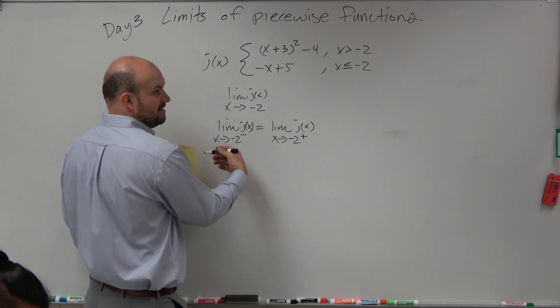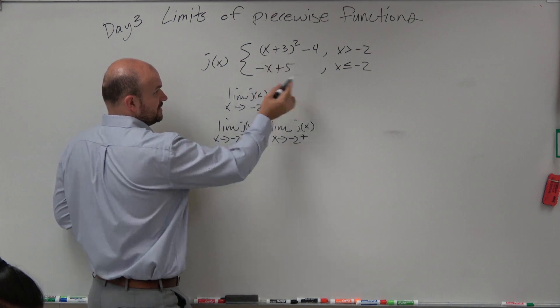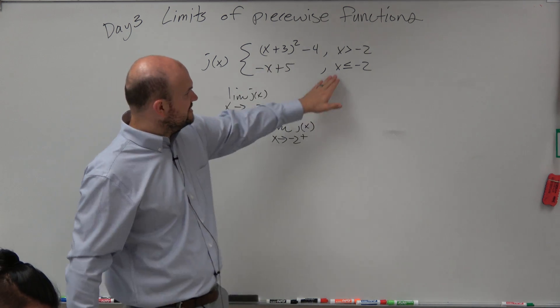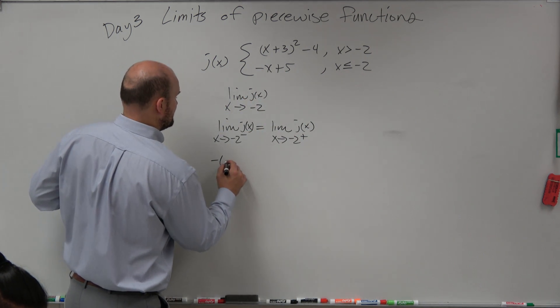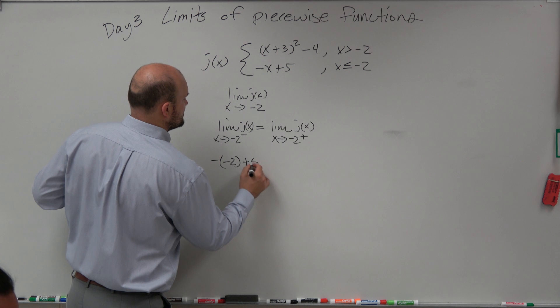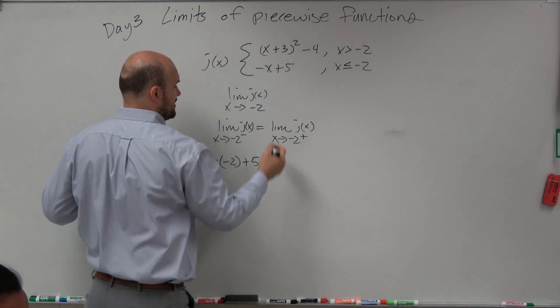So now if I just evaluate them, I'm just showing a little bit different notation. So now I can plug in negative 2 into the left-hand limit. Since this is x is less than or equal to negative 2, this is going to be my left-hand limit. So it's going to be minus negative 2 plus 5 has to equal, since x is greater than negative 2, this is my right-hand limit.